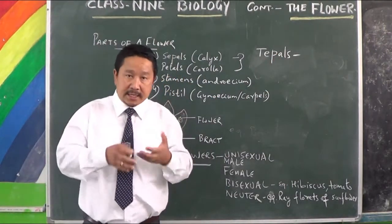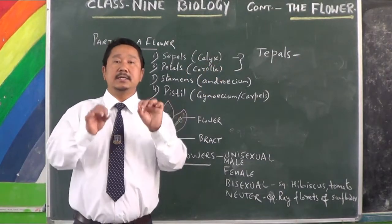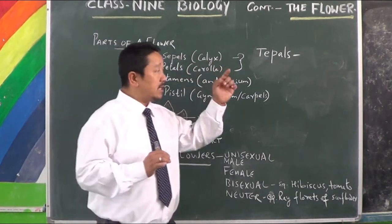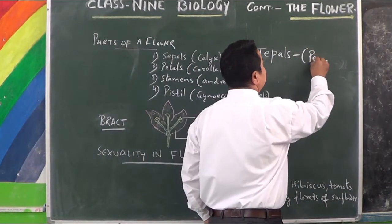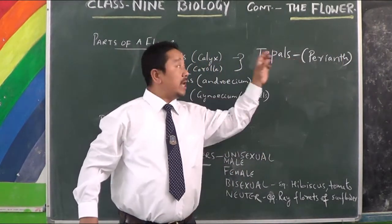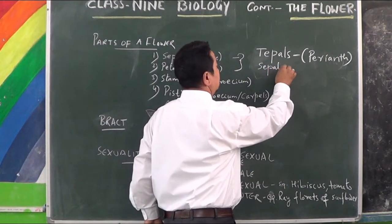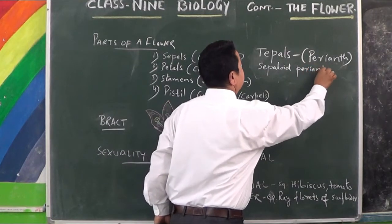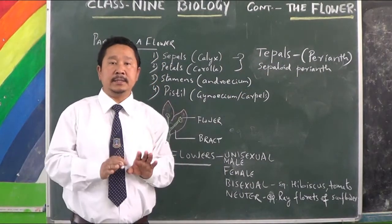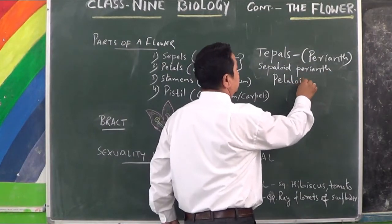These tepals may be green in color or may be non-green in color. These tepals are called perianth. When these tepals or perianth are green in color, they are called sepaloid perianth. And when they are in non-green color, then they are called petaloid perianth.